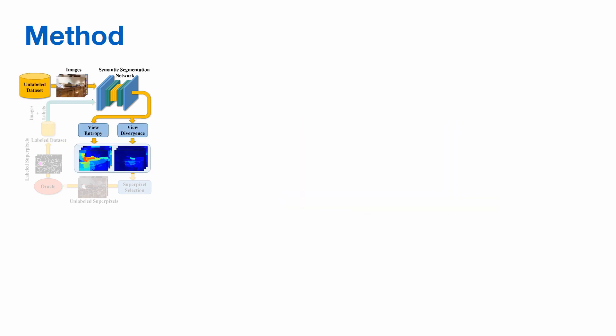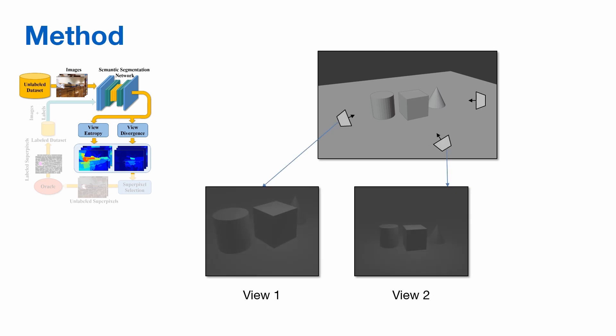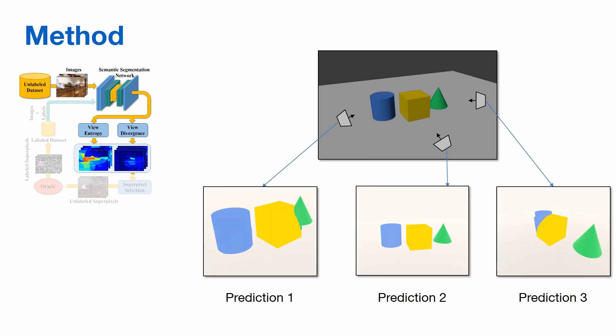Next, we look at score calculation. We notice that the same points in space may be visible across several views. However, the network may not predict the classes consistently across the views. We aim to exploit these inconsistencies as a model uncertainty measure.